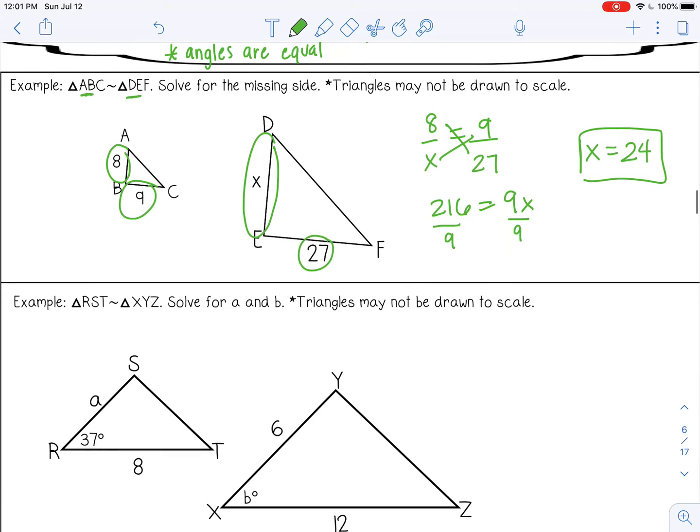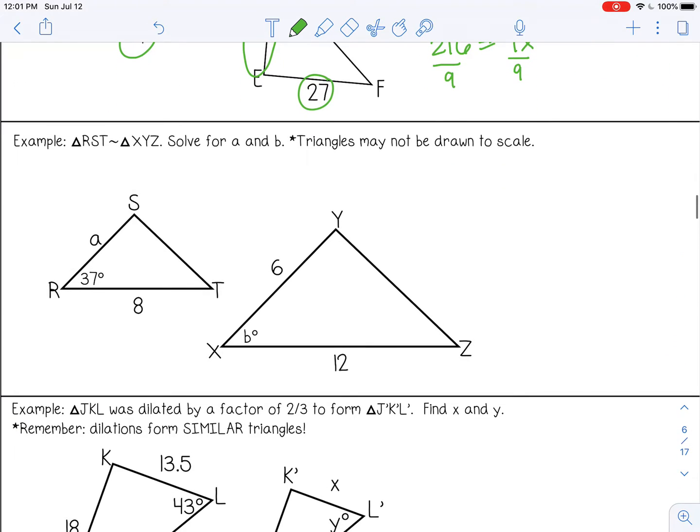Let's try another example. We know the triangles are similar, and we want to solve for A and B. Angles are very easy because corresponding angles are equal, so this will be 37 degrees. It corresponds here.